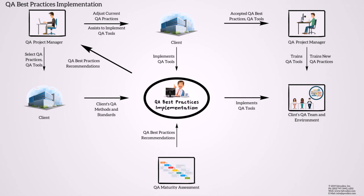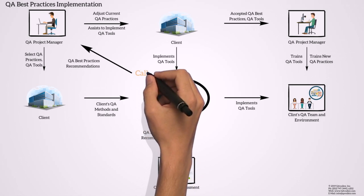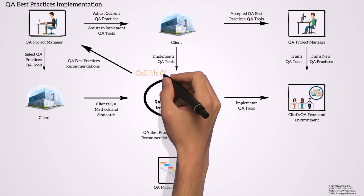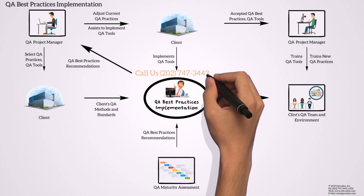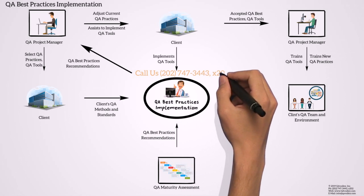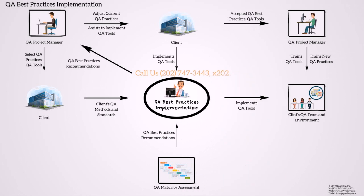To arrange a QA maturity assessment cycle, please call us at 202-747-3443, extension 202. Thank you.